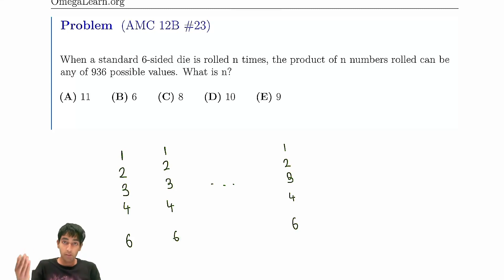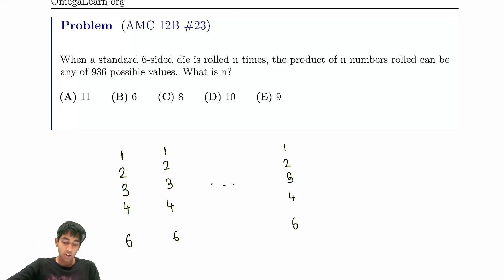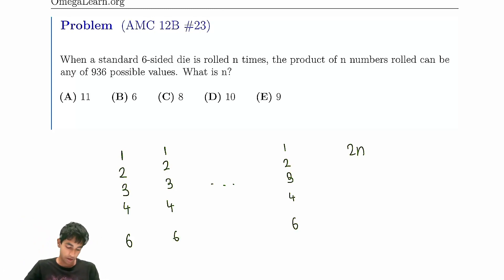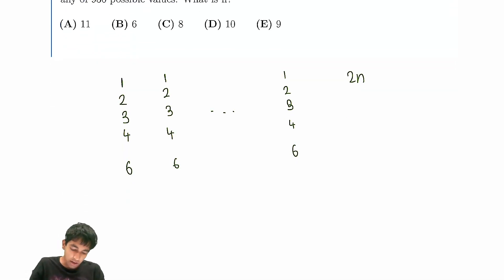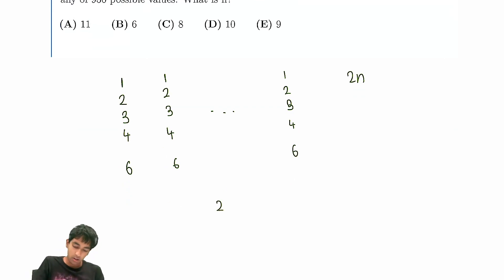Every die value you multiply can have at most two prime factors. So in total, we can have at most 2n prime factors for the product. And the only primes here — ignoring 5 — are 2 and 3. So we ask: can any combination of 2s and 3s with at most 2n total prime factors appear? For example, 2^(2n) × 3^0, all the way up to 3^(2n) × 2^0?